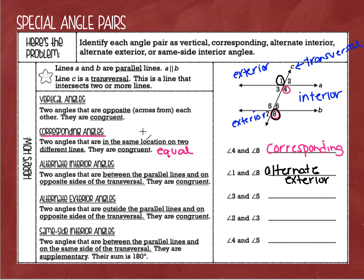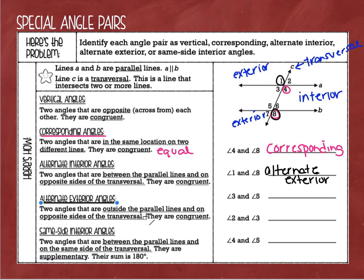Alternate exterior angles are down here on our list. Alternate exterior angles are two angles that are outside the parallel lines, on opposite sides of the transversal, and again they are congruent.